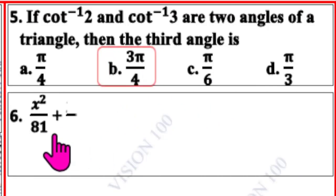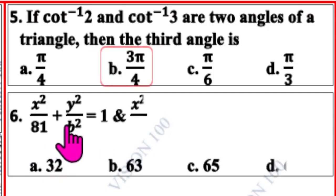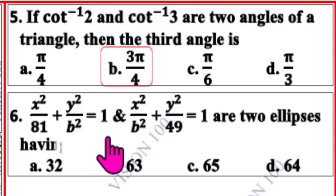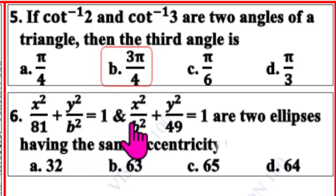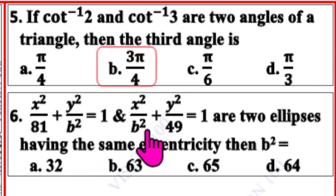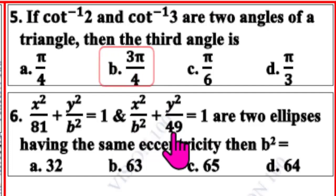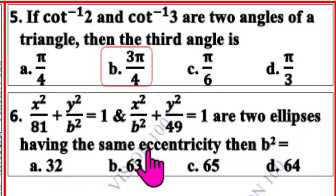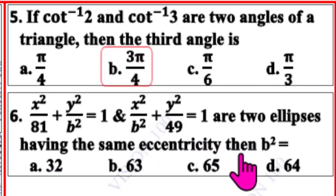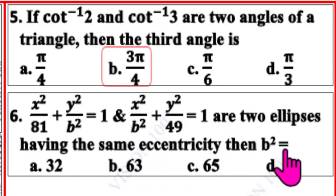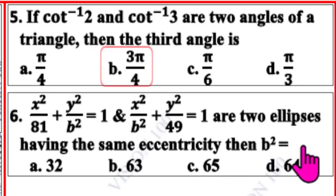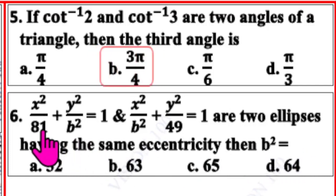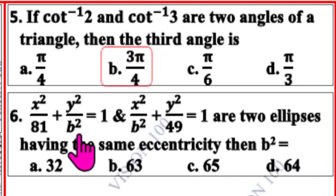Sixth question. x² / 81 + y² / b² = 1 and x² / b² + y² / 49 = 1 are two ellipses having the same eccentricity, then b² equals — the answer involves 81.